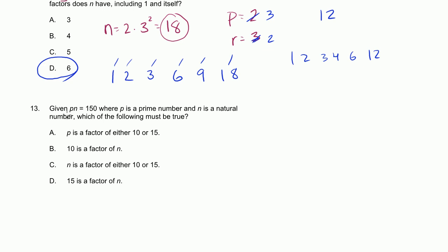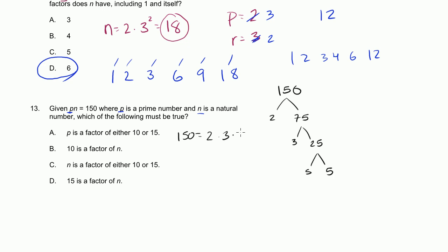Problem 13. Given p times n equals 150, where p is a prime number and n is a natural number, which of the following must be true? Let's think about it — what are all the possible values for p? To do that, we need the prime factorization of 150. That's 2 times 75, and 75 is 3 times 25, and 25 is 5 times 5. So 150 equals 2 times 3 times 5 times 5. That's its prime factorization.